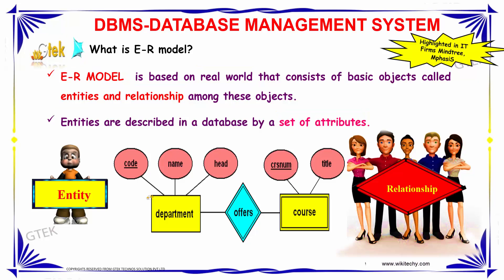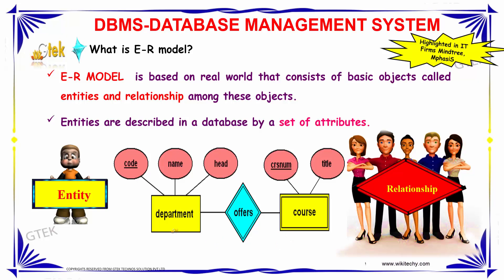In this example, our entity can be a department. A department will have a name, a head, and a code — and the code forms the primary key. If a department is one entity, then a course is another entity which has a course number and title as its attributes. These two are related, as a department will offer a course.